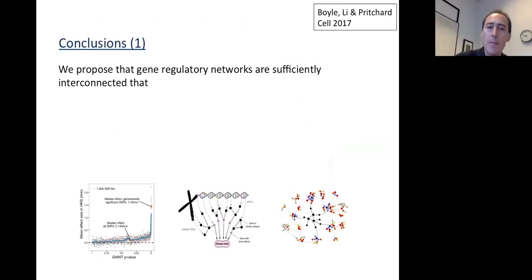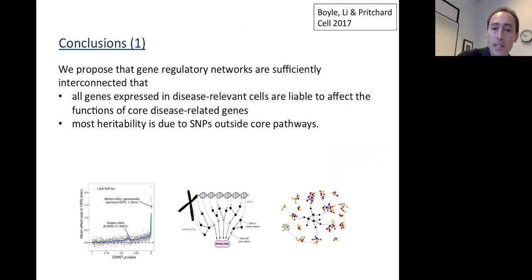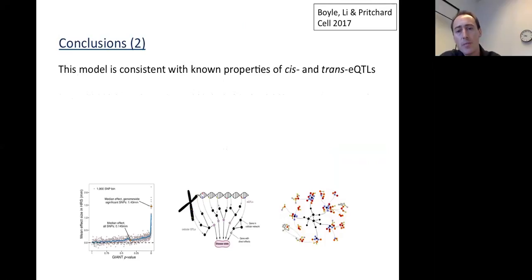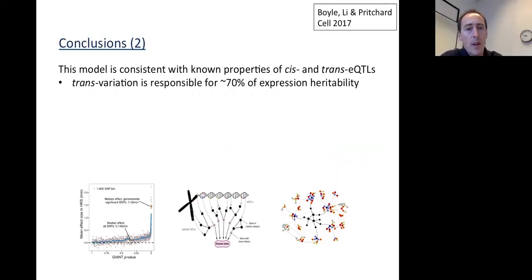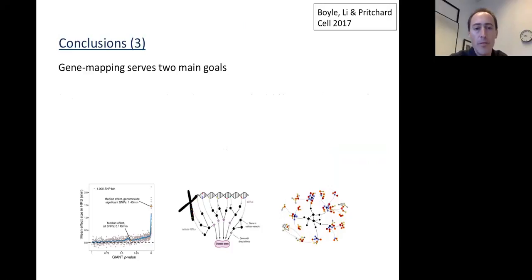We propose that gene regulatory networks are sufficiently interconnected that all genes expressed in disease-relevant cells are liable to affect the functions of core disease-related genes, and furthermore that most of the heritability is due to SNPs that lie outside of core pathways. This hypothesis we refer to as the omnigenic model. We argue this model is consistent with what we know about cis and trans-eQTLs, where trans variation is responsible for about 70% of expression heritability but with tiny effect sizes, and when core genes sit in co-regulated gene networks, these act as amplifiers for peripheral variation.